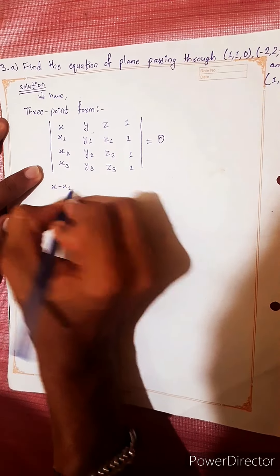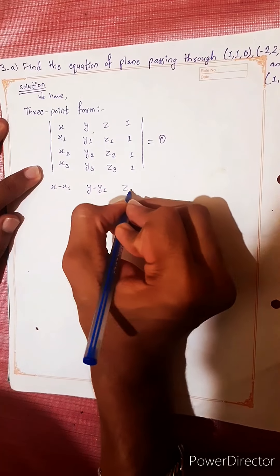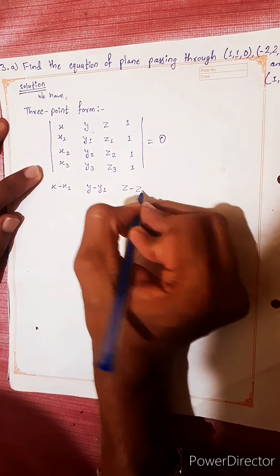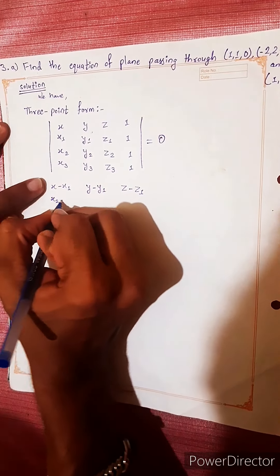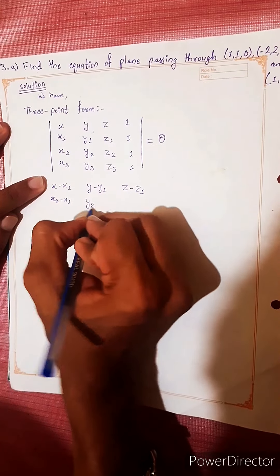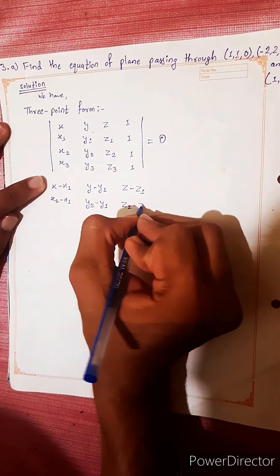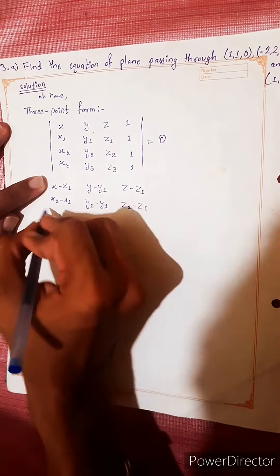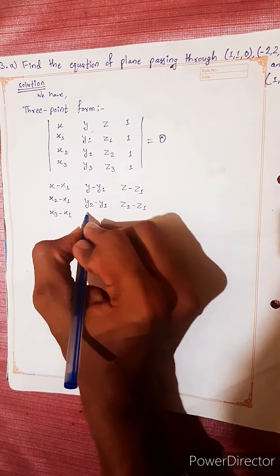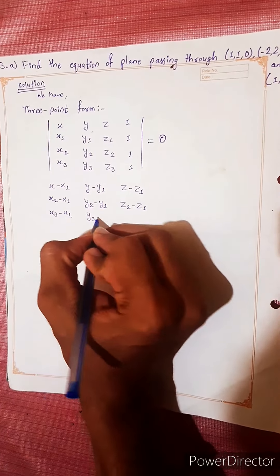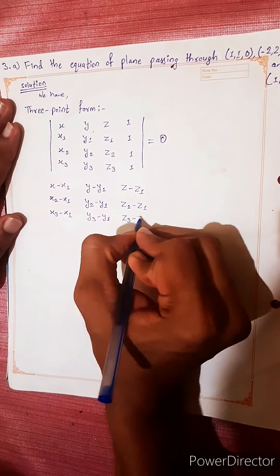The determinant matrix has rows defined as: first row — (X minus X1), (Y minus Y1), (Z minus Z1); second row — (X2 minus X1), (Y2 minus Y1), (Z2 minus Z1); third row — (X3 minus X1), (Y3 minus Y1), (Z3 minus Z1). This equals zero.